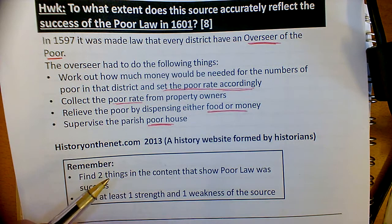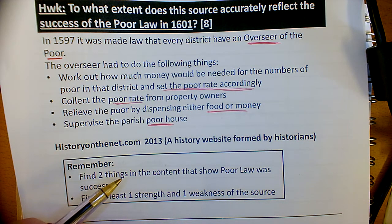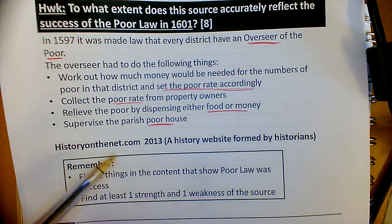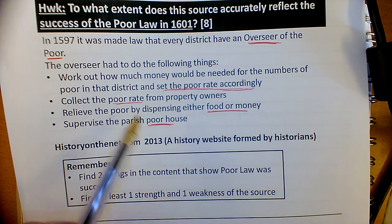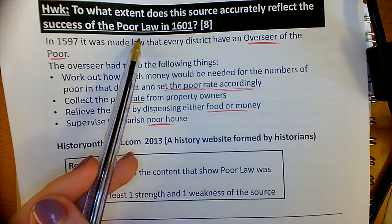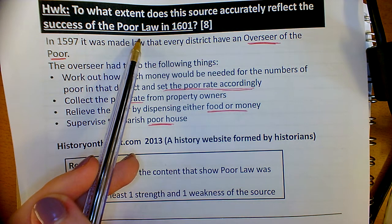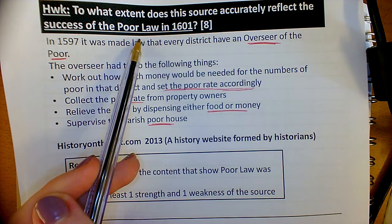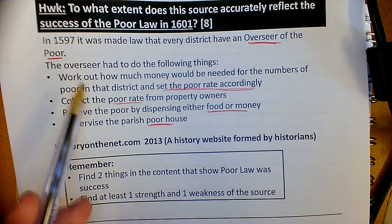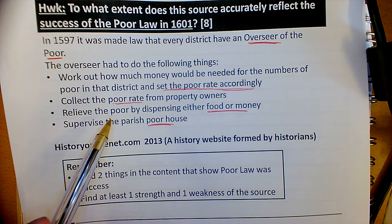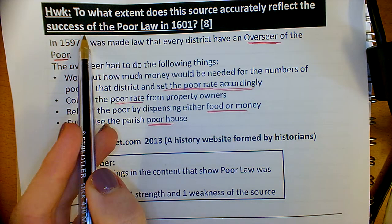Then you move on to own knowledge. I always use own knowledge to say what's missing from the source, so that I'm continuing to analyse it. So what does this source not tell us about the Poor Law? Well, the fact that they judged the poor and put them into groups — able-bodied poor and non-able-bodied poor. If you were able-bodied, you're not really going to get poor relief because technically you can go and get your own job, and that would have meant the Poor Law wasn't really a success because it didn't help everybody.